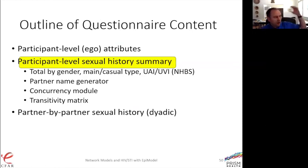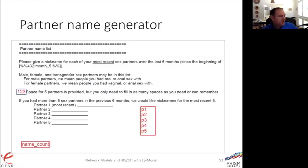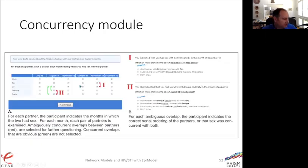At the ego level we want total partners by gender and partner type and whether people had unprotected anal intercourse. We reused NHBS questions — they're well developed and tested tens of thousands of times. We use a partner name generator and then a partner-by-partner sexual history. We asked people to give their partners' names over the last six months starting with the most recent — names don't have to be real, just any way the participant can remember them. Then we construct the grid.